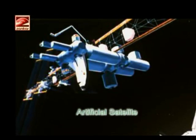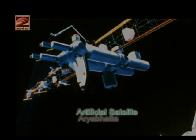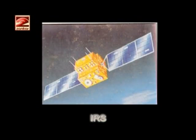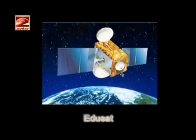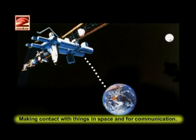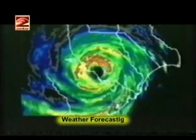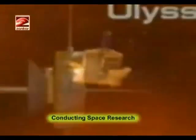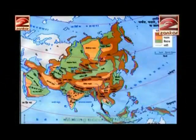India has put several satellites into orbits around the Earth for the benefit and progress of mankind. These are artificial or man-made satellites. India's satellites include Aryabhata, INSAT, IRS, Kalpana-1, EDUSAT, Bhaskar, etc. They are used for communication, weather forecasting, telecommunication and broadcasting programs on radio and television, conducting space research, implementing educational programs, and making accurate maps.